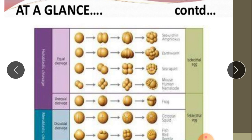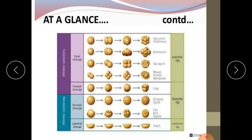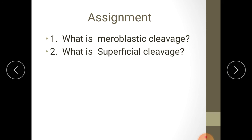With this we have completed cleavage and its patterns. Assignments: first, what is meroblastic cleavage? Second, what is superficial cleavage? Based on different criteria, there are different types of cleavages: holoblastic, meroblastic, radial, superficial, determinate, and indeterminate. Try to understand and write them all. Thank you.